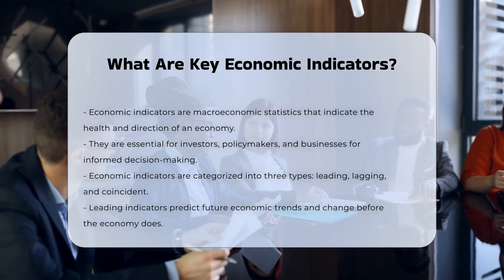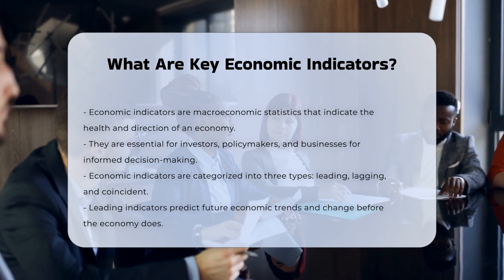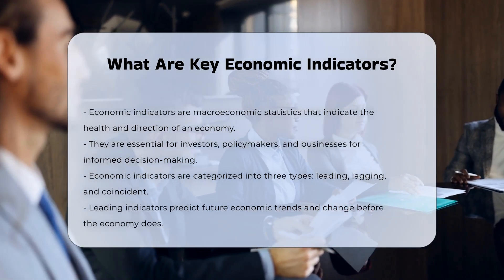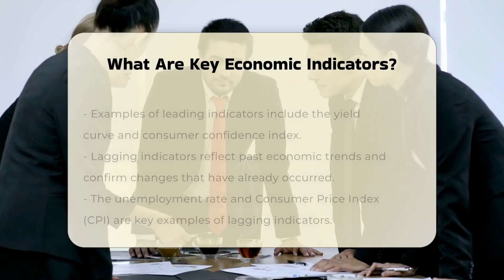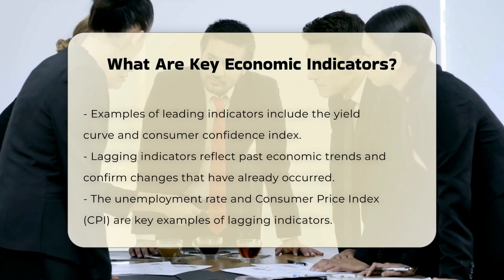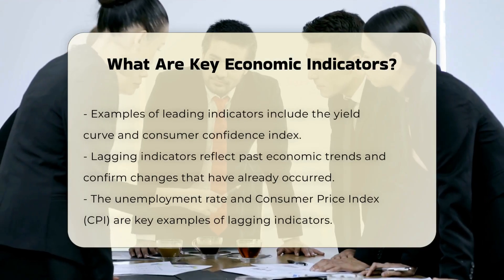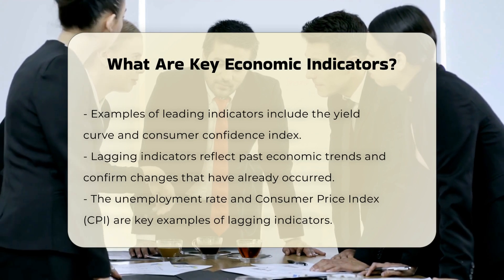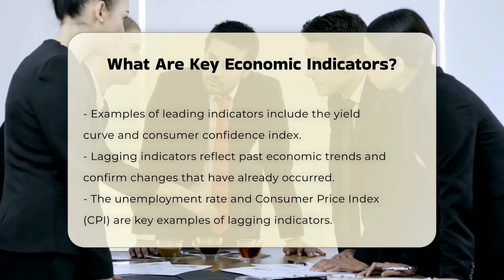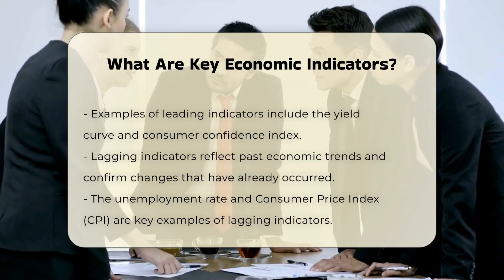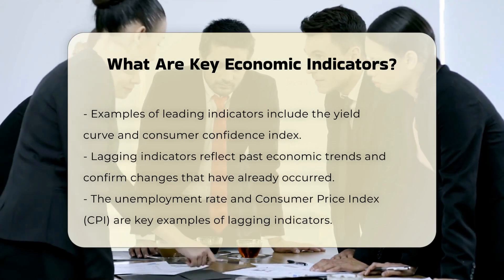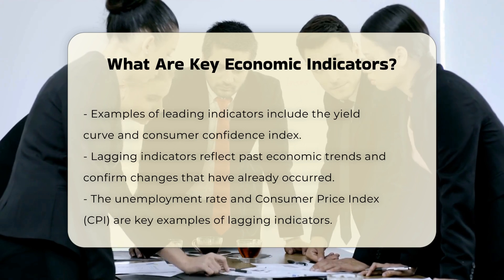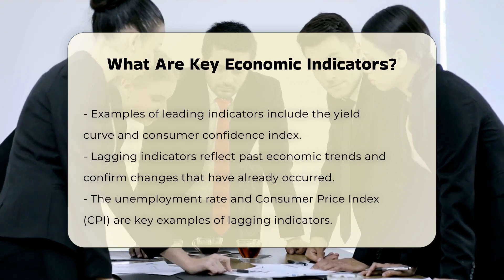Lagging indicators reflect past economic trends and confirm changes that have already occurred. The unemployment rate and the Consumer Price Index, CPI, are examples of lagging indicators. The CPI measures inflation by tracking the prices of a basket of goods and services, and it shows that inflation has already occurred when it increases.